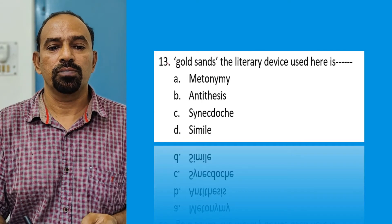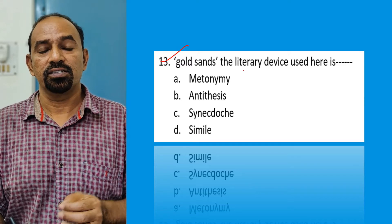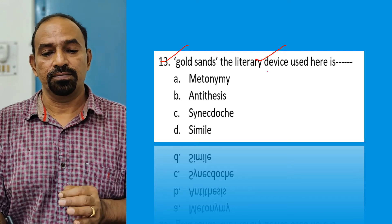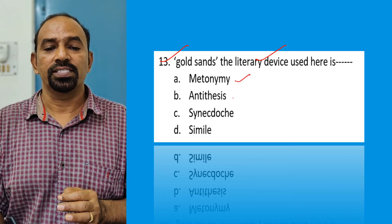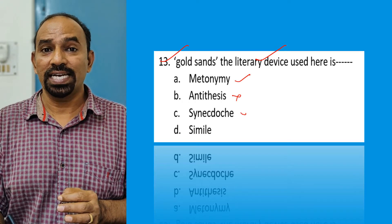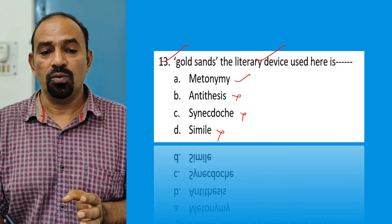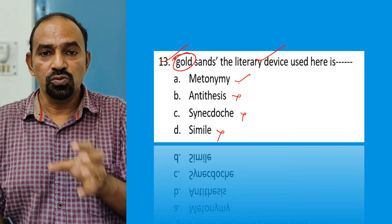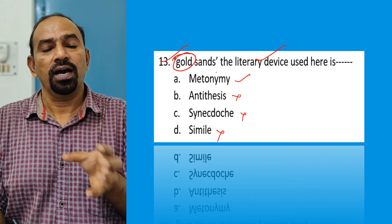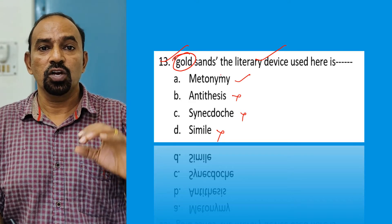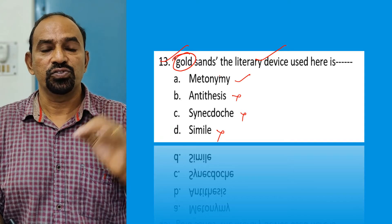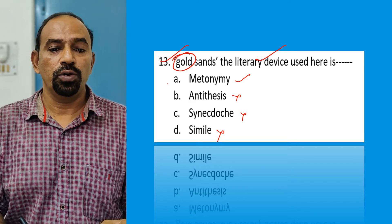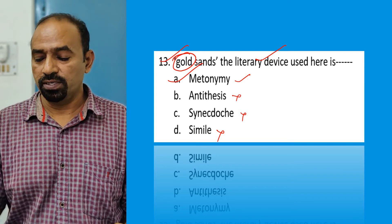Question thirteen: What is the literary device in 'gold sands'? The answer is metonymy. 'Gold' here is used to represent another name — the golden rays of the sun that give the sands their golden color. One name used to represent another is metonymy. So metonymy is the right option.